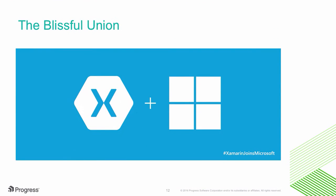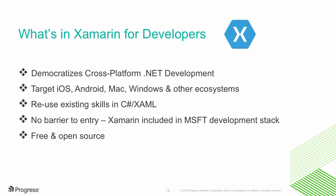As we all know, at the beginning of 2016 there was a blissful union with the Microsoft acquisition of Xamarin. This has interesting repercussions for .NET developers. Microsoft has now truly democratized cross-platform mobile development with .NET. With Xamarin, you can reuse your existing skills in C# and XAML and target iOS, Android, Mac, and a host of other ecosystems. There is literally no barrier to entry with Xamarin being free, open source, and included in the Microsoft dev stack.